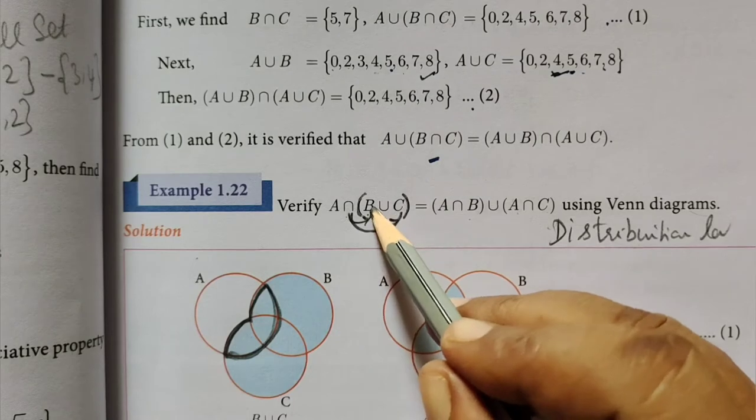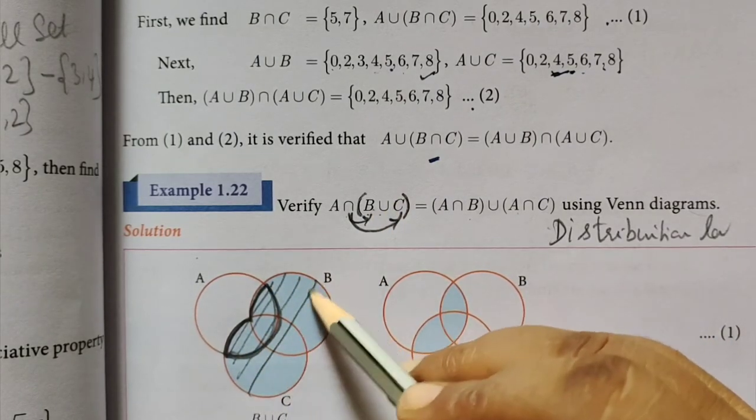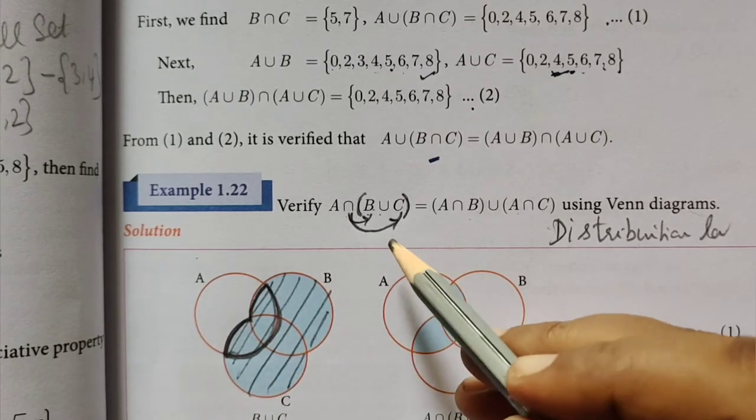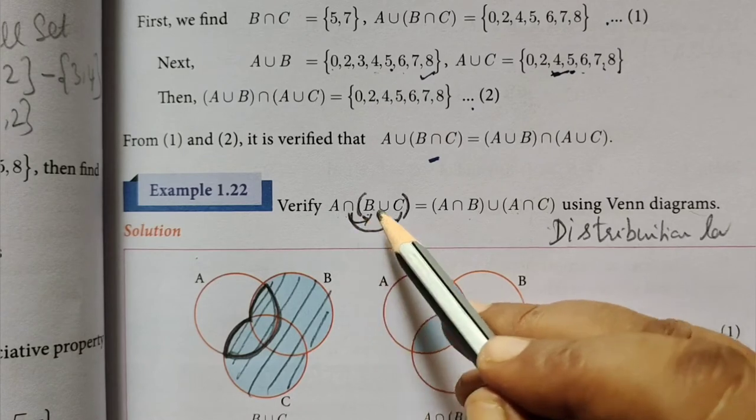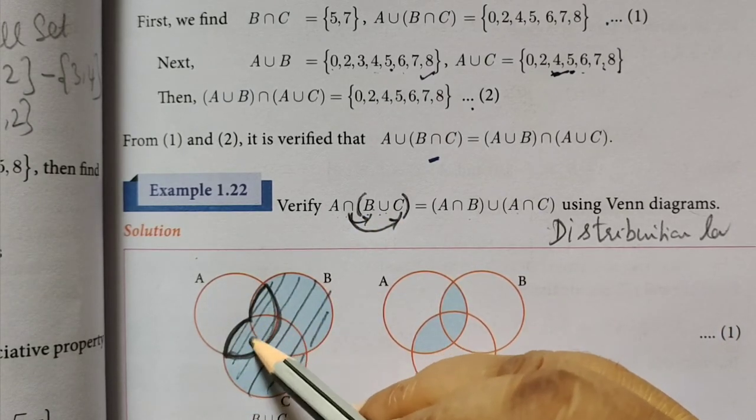So, B union C. B union C is completely shaded. I just put it in the line. That means A intersection B union C. A intersection B union C is completely shaded.